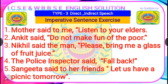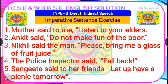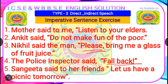Now some exercises for imperative sentences. Exercise 1: 'Madha said to me, listen to your elders.' — this is advice. Exercise 2: 'Ankit said, do not make fun of the poor.' — advice. Exercise 3: 'Nikhil said to the man, please bring me a glass of fruit juice.' — request (because 'please' is used). Exercise 4: 'The police inspector said, fall back.' — order. Exercise 5: 'Sangita said to her friends, let us have a picnic tomorrow.' — suggestion. Write your answers and check whether they are correct.